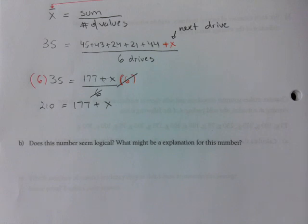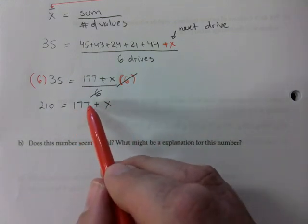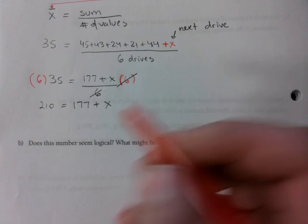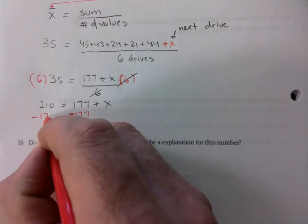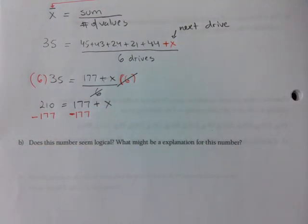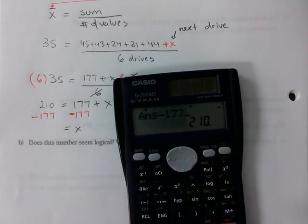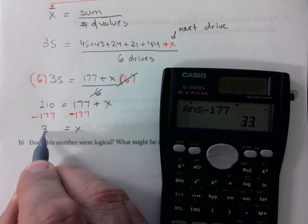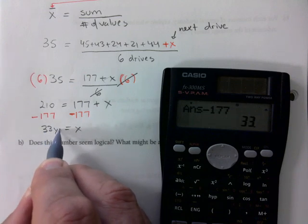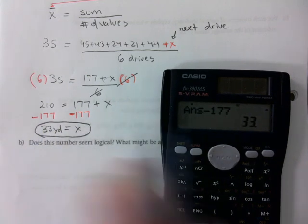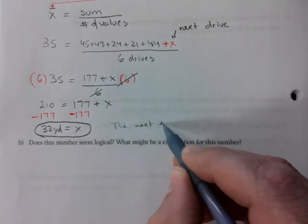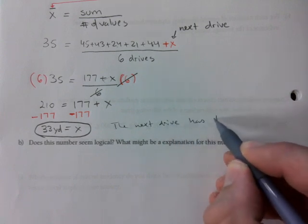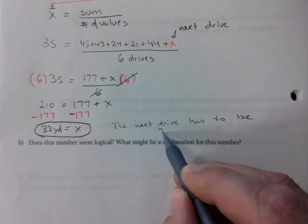Okay, 6 is gone. Now we want to subtract 177 because it's adding to x. We're going to subtract 177 from both sides and voila, you're there. So I have 210 on my calculator still, and we know we're talking yards here. The next drive has to be 33 yards.